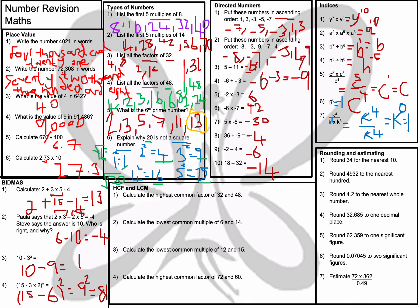Now rounding and estimating. Round 34 to the nearest 10 — looking at my units column, that's going to be 30. Round 4,932 to the nearest 100 — looking at the tens digit which is 3, so it rounds to 4,900. Round 4.2 to the nearest whole number — that equals 4. Round 32.685 to one decimal place — the 8 rounds it up, so it's 32.7.